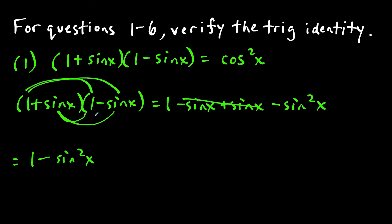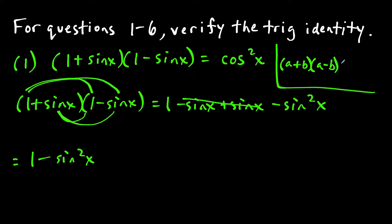The reason this worked out so nicely is that we multiplied a binomial and its conjugate. Anytime you multiply (a + b)(a - b), this works out to a squared minus b squared. So the shortcut here would just be to say one squared minus sine squared x — I just wanted to show all the steps.